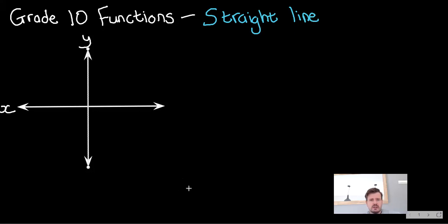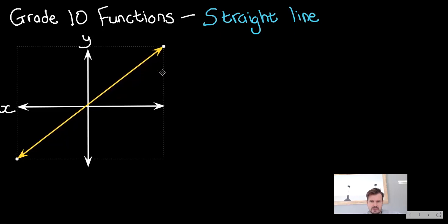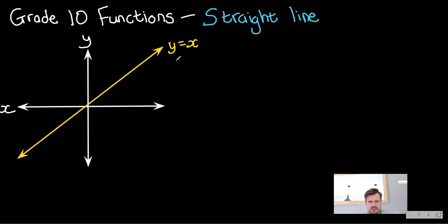The first one you'll remember from Grade 8 and 9 is your regular straight line function. Your straight line function could be y equals x — just going straight through the middle. You could plot that using a table. You couldn't plot it using the intercept method, because you'd get both intercepts at the origin, and you wouldn't have two separate points to join.